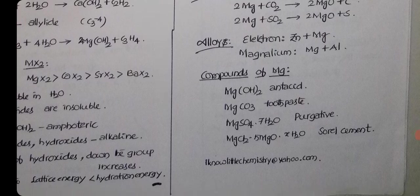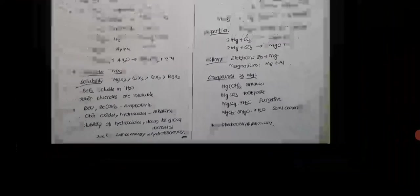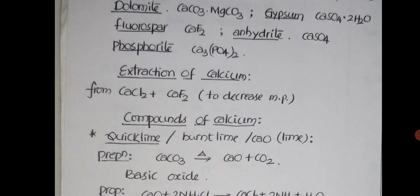MgCl2·5MgO·xH2O is Sorel cement. Few more lines, we'll conclude this one.